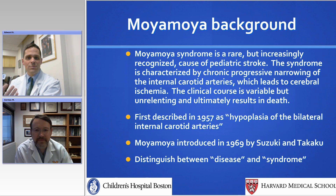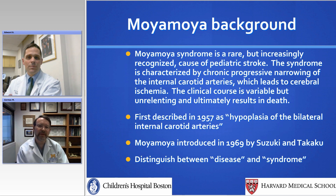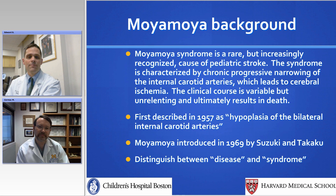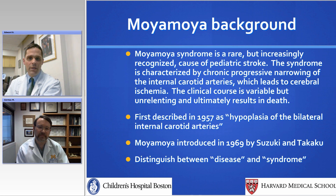As most folks know, moyamoya is a very rare condition. It's characterized by progressive narrowing of the internal carotid arteries and their associated branches — the anterior cerebrals and middle cerebrals. The course of progression is very variable. In some kids, it's very rapid and can be very fulminant. In other kids, it can be very slow, but generally it is a progressive disease.